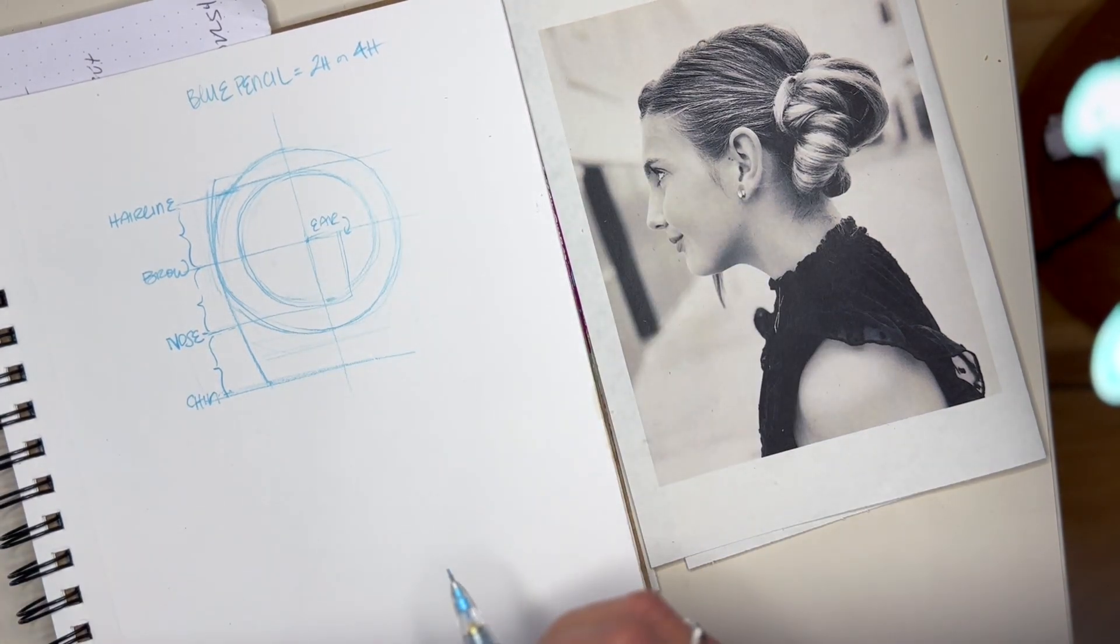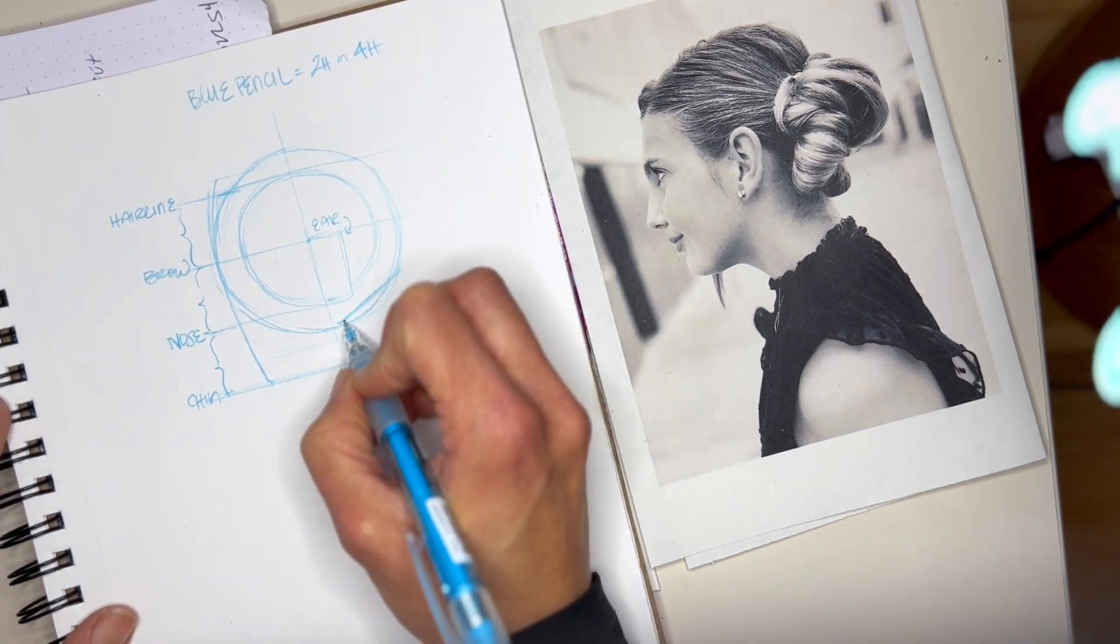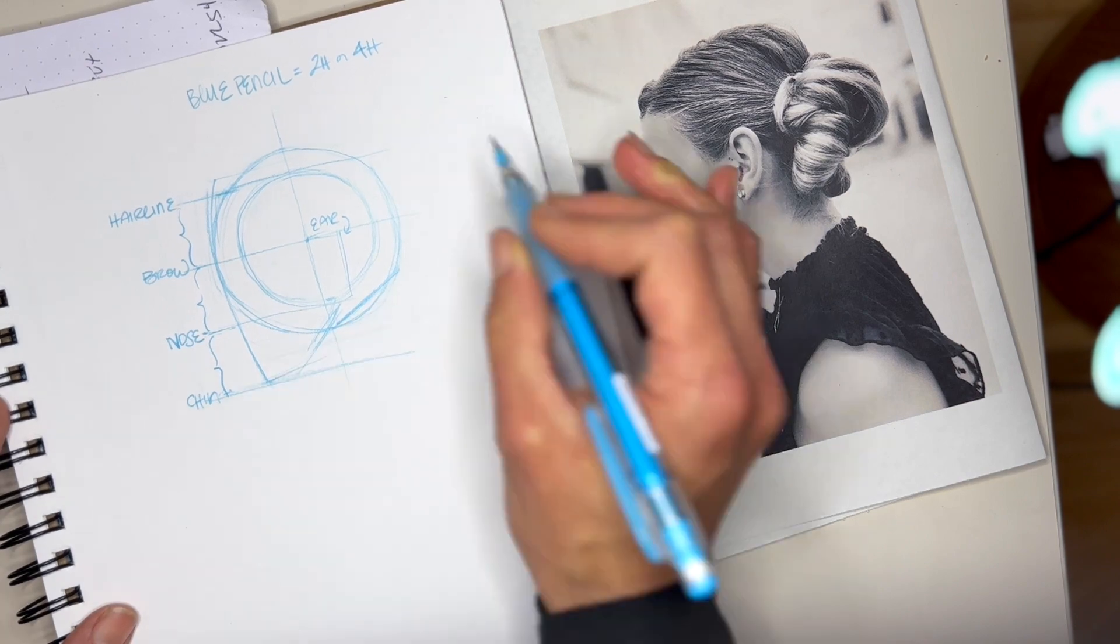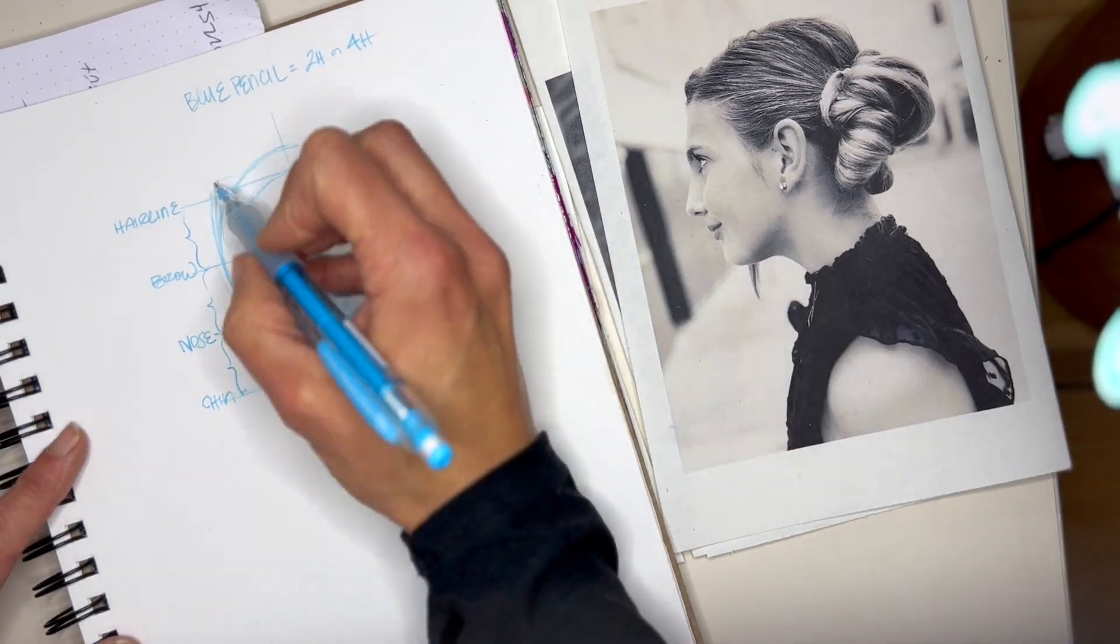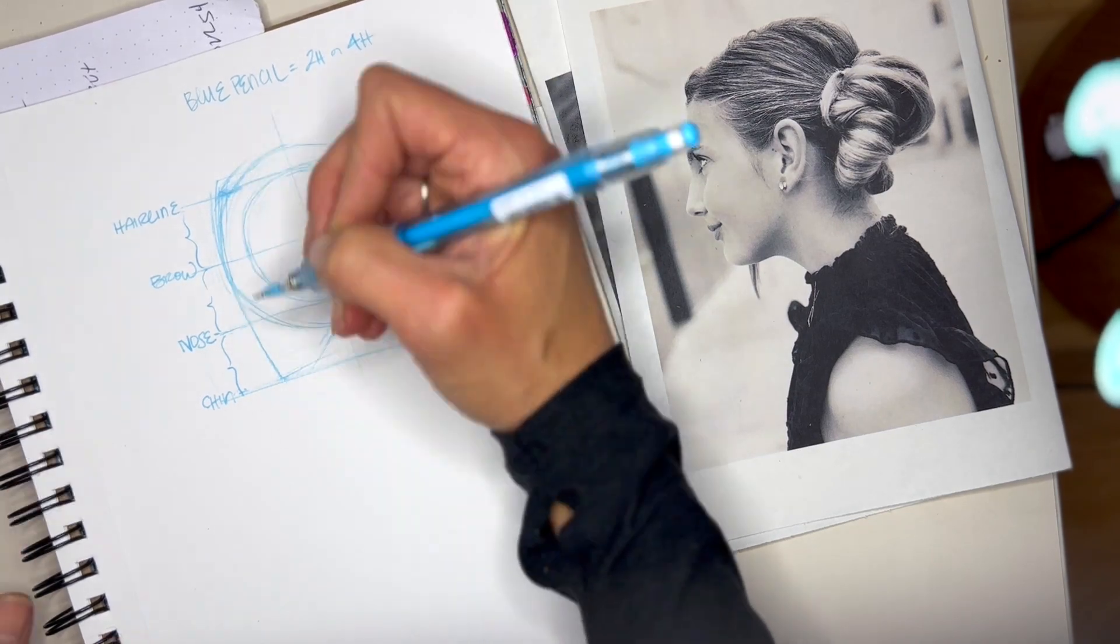The ear falls between the line of the brow and the nose. For the jawline, you'll create a little bit more of that angle of the cranium. The jawline comes out from the ear and down to that bottom point that indicates the chin.